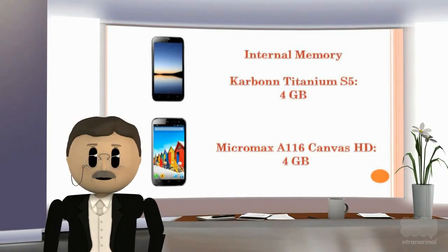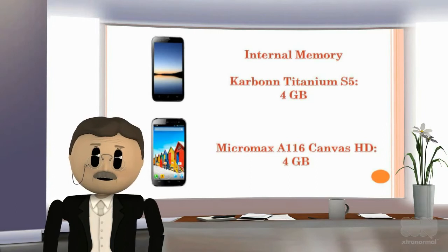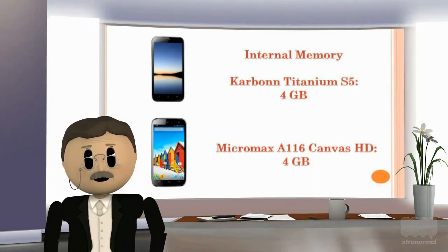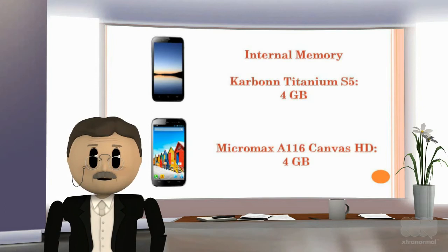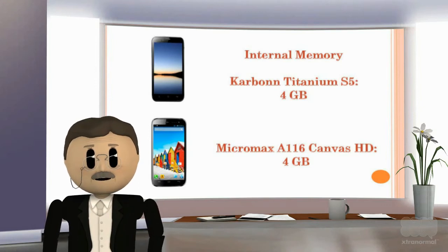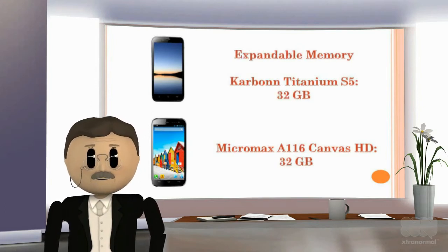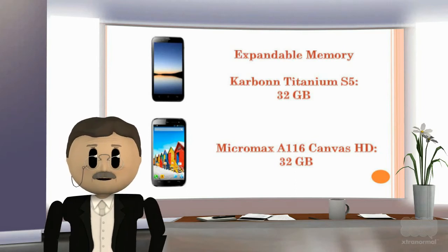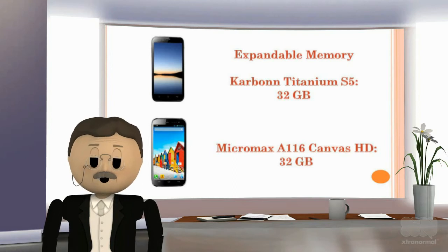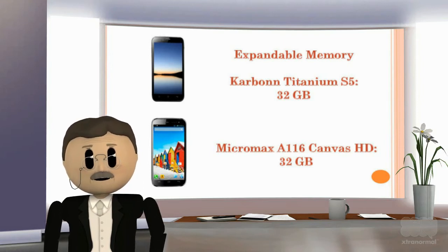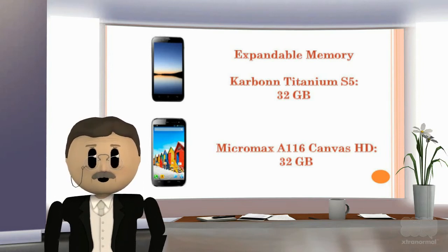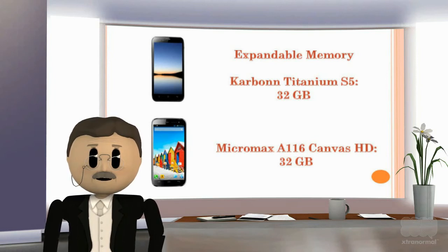Internal memory of Carbon Titanium S5 is 4 GB and internal memory of Micromax A116 Canvas HD is 4 GB. Expandable memory of Carbon Titanium S5 is 32 GB and expandable memory of Micromax A116 Canvas HD is 32 GB.